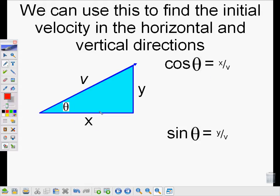I can get the x component or the horizontal component by itself real easily if I multiply both sides by v. This undoes dividing the x by v. So it leaves me with v times the cosine of theta is equal to x.